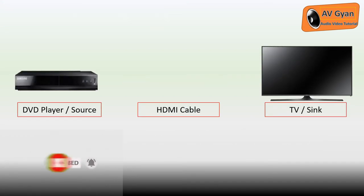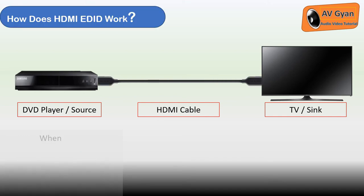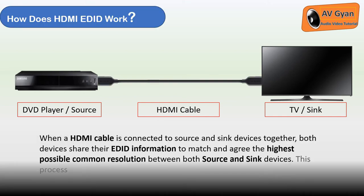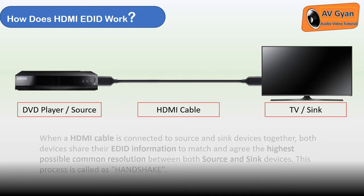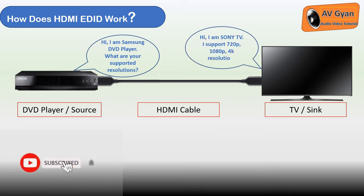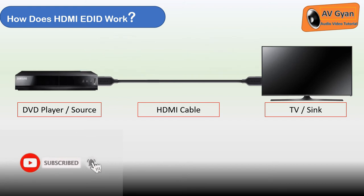The following components are required to demonstrate the basic usage of this: a source — in this case a DVD player — a sink, in this case a TV, and an HDMI cable to connect them together. When an HDMI cable is connected to the source and sink devices together and you power them on, the sink device shares its EDID information to the source.